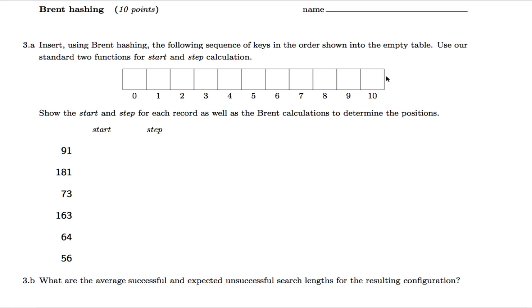We know that the table size is 11 and we're going to use as the underlying method double hashing. So the start is at v modulo 11 and the step is at v modulo 9 plus 1.